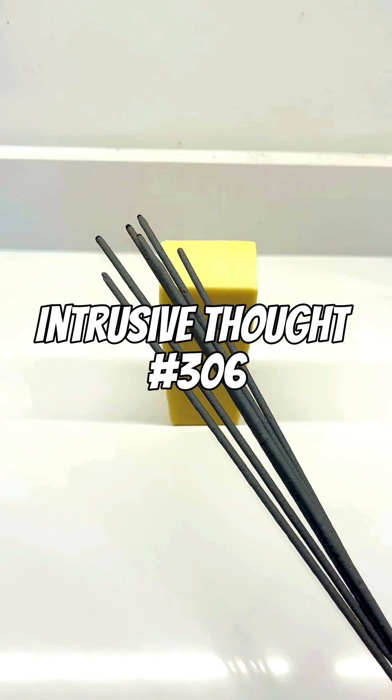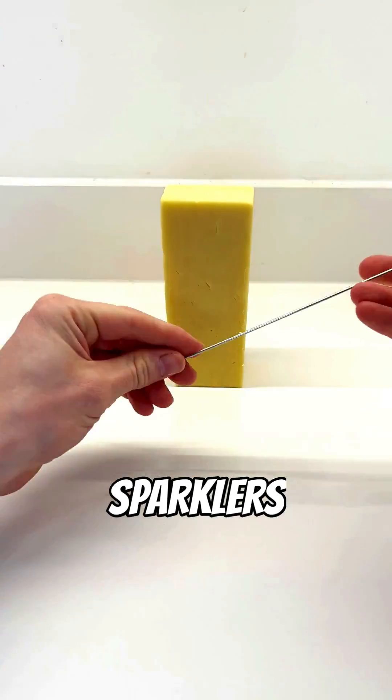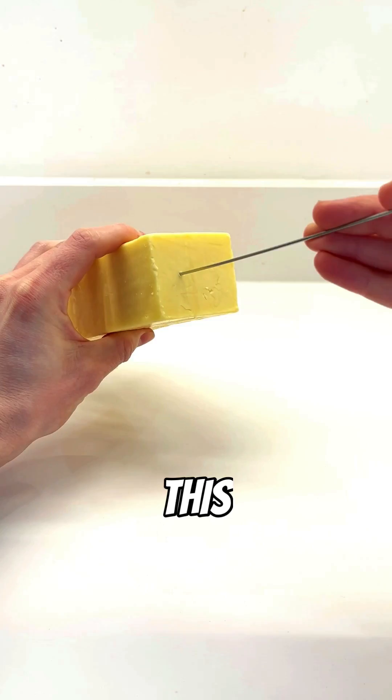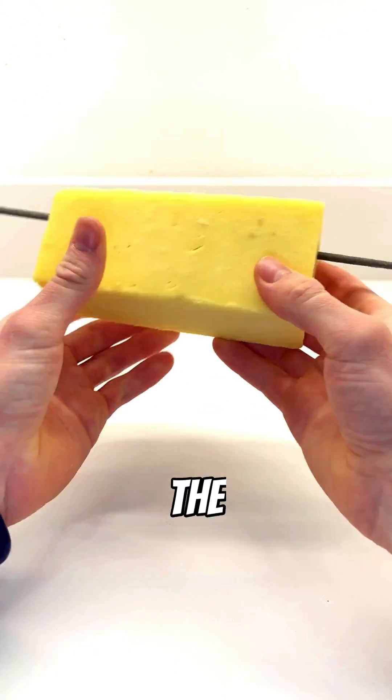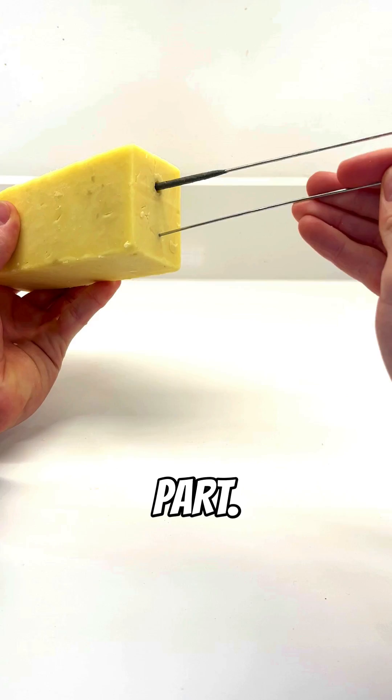Intrusive thought number 306. What would happen if you burned sparklers through an entire block of cheese? This did something very unexpected. At the end, I'll open it up and show you all the inside. You guys seem to like that part.